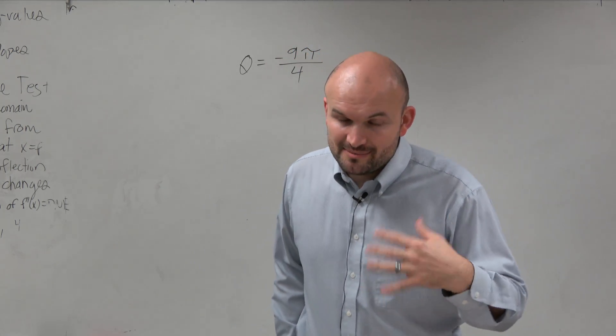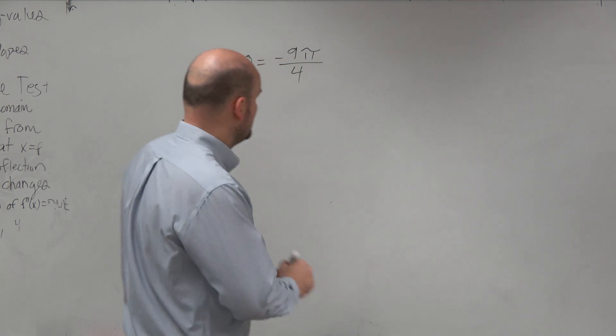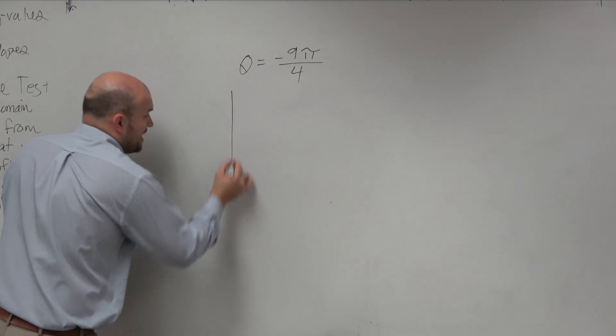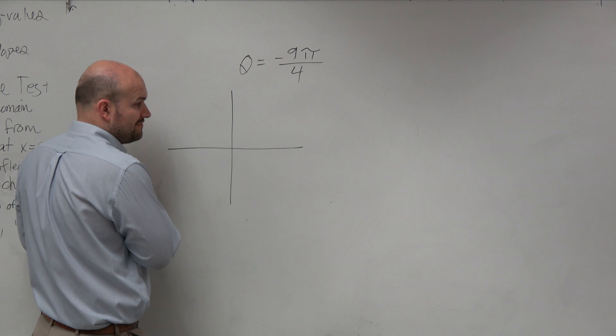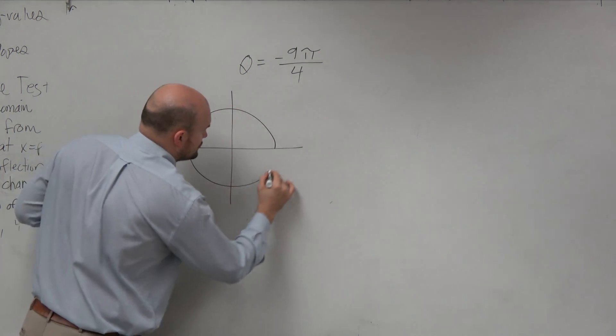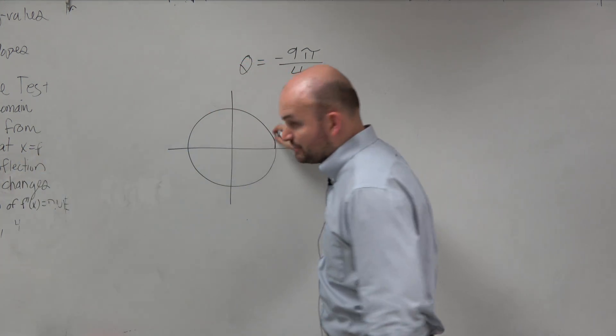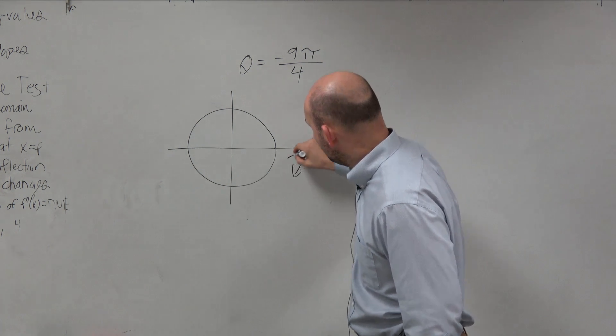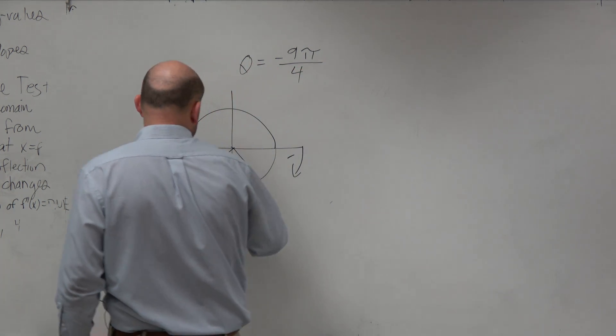So I want to see maybe there's a couple ways to do this. The first way is to graph it as we know how to graph it. So we can just break this up into fourths. It's a negative, so we're going to be going in the negative direction, right? And we'll break everything up into fourths.